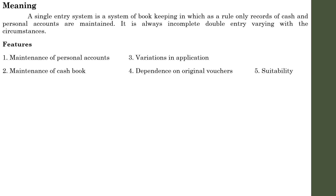Next feature: Suitability. Suitability means who can use this method. Even though it has all these issues, a small businessman or any sort of business that cannot afford to follow a Double Entry System follows a Single Entry method. It is suitable for small concerns, small businessmen, and proprietary businesses. In some special cases, partnership concerns also follow Single Entry System. These are the salient features with regard to Single Entry System.